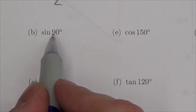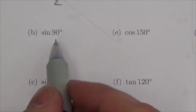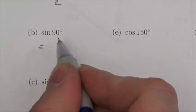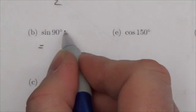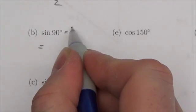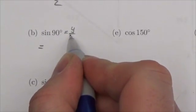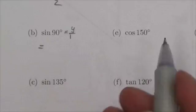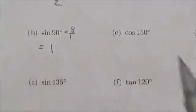Next: sine of 90 degrees. This is a quadrantal angle — an angle that shows up on the axes — so it has a special value. When you think about this as y over 1, at 90 degrees y would equal 1 on the unit circle, so sine of 90 degrees equals 1.